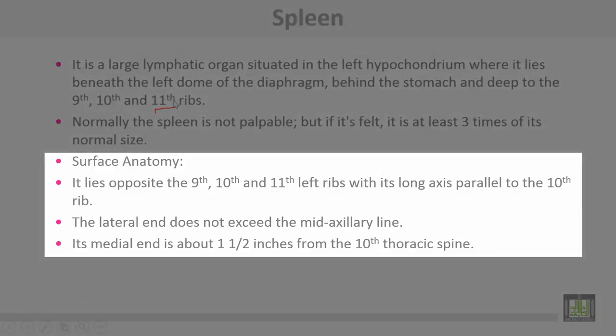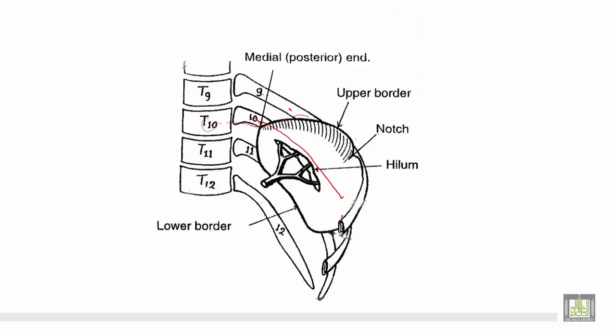The surface anatomy of the spleen lies opposite the ninth, tenth, and eleventh ribs, with its long axis parallel to the tenth rib. The lateral end doesn't exceed the mid-axillary line, while the medial end is about one and a half inches from the tenth thoracic spine.